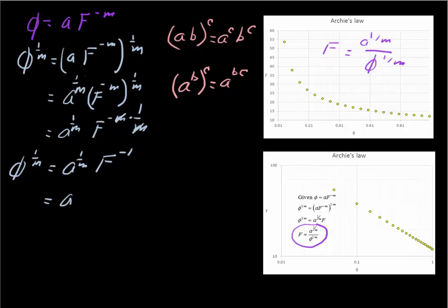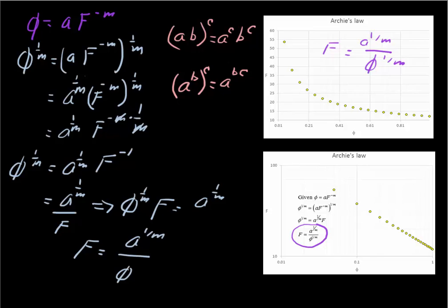This is also just equal to a to the 1 over m divided by F. So if we multiply both sides of the equation by F, we get phi to the 1 over m times F equals a to the 1 over m, or that F equals a to the 1 over m divided by phi to the 1 over m — which is what I've written down here. Make sure you can work through these different relationships.